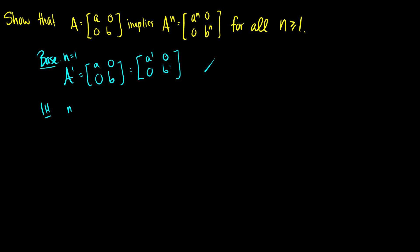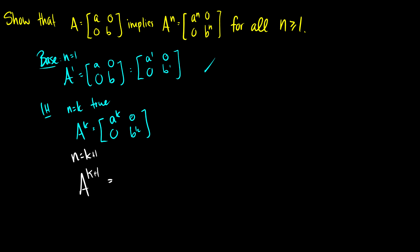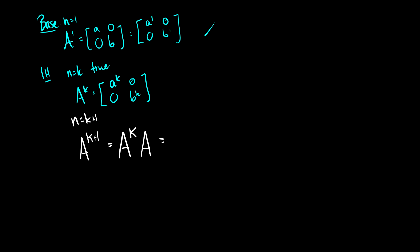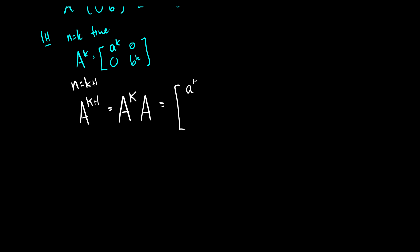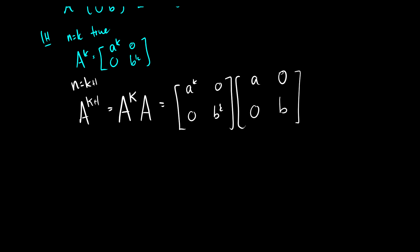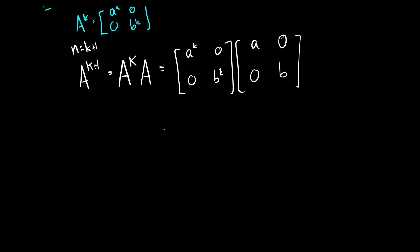For the induction hypothesis, we assume n = k is true, meaning A^k equals [a^k, 0; 0, b^k] on the diagonals. Now we need to show n = k+1 is true. Much like before, we take A^(k+1) = A^k times A. You need to know matrix multiplication to do this step — if you don't have a linear algebra background, don't feel bad; you will learn this eventually.